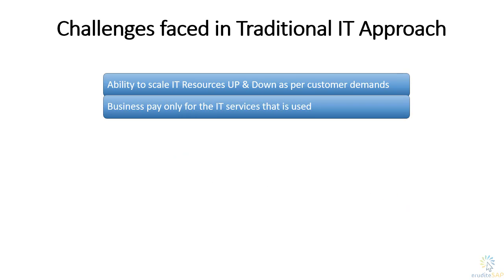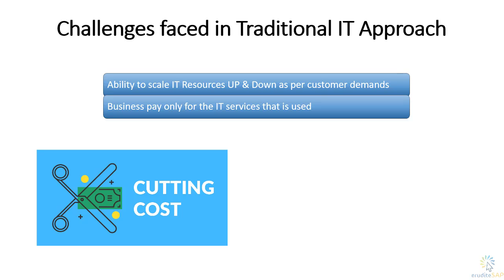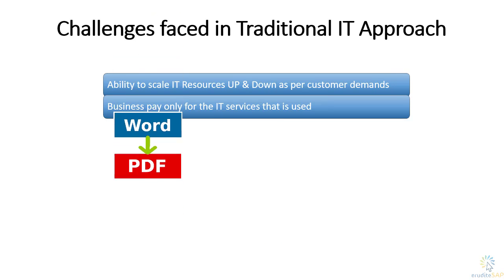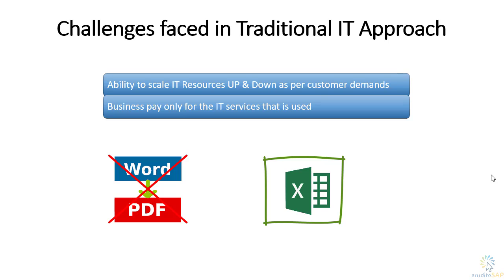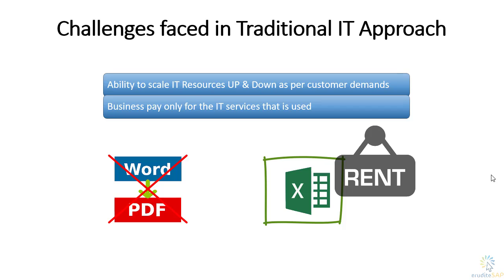The next challenge is: how can a business pay only for the IT services that it is actually using? A company may buy big hardware and costly software, only to realize they are not utilizing many of its features. For example, if I have software to convert Word files to PDF and another for Excel processing, but I only use the Excel program — what if I could pay only for the Excel software and rent the PDF converter only when needed?